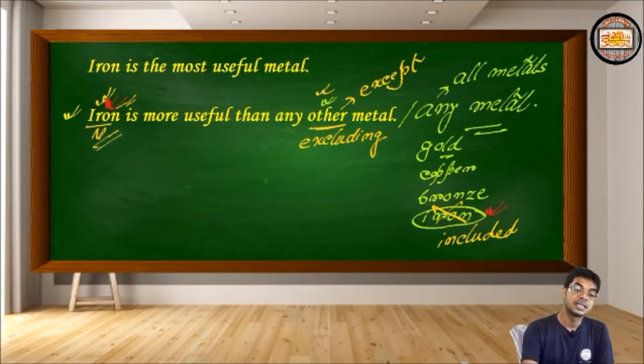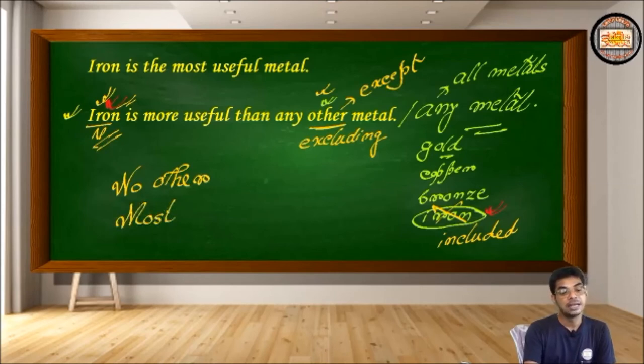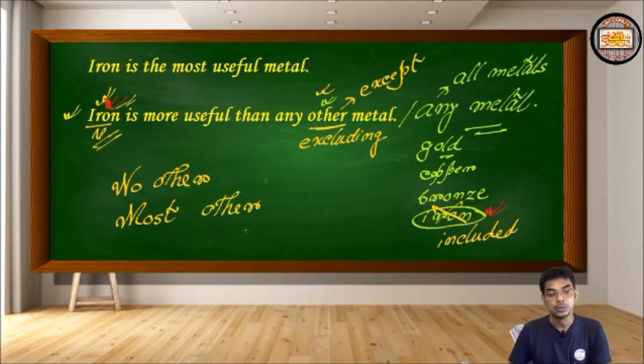That's why in many other parts of this transformation of degrees of comparison, you get no other, you get most other. And these are used only for the purpose of exclusion, to exclude the guiding noun, the noun with which the others of the same group are compared.